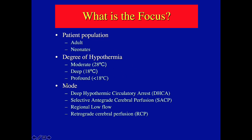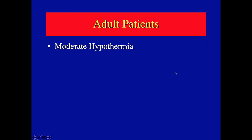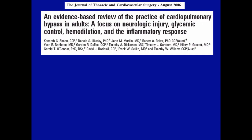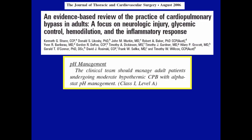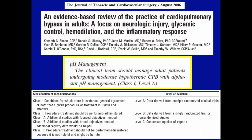In adult patients with moderate hypothermia, there are clear recommendations. Clinical guidelines state the team should manage adult patients undergoing moderate hypothermia with alpha stat pH management — a Class I, Level A recommendation based on multiple randomized clinical trials. In the United States, alpha stat management is standard for adults using mild or moderate hypothermia.